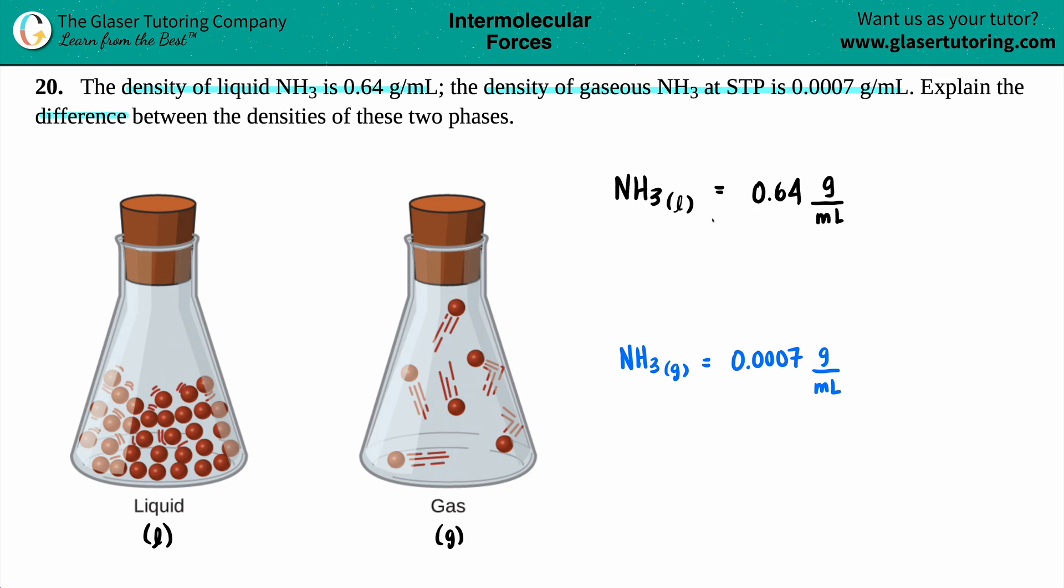Now to help us out in this question, what I'm going to do is basically take the values and turn them into talking points. What does 0.64 grams per milliliter actually mean? What does 0.0007 grams per milliliter actually mean? The first thing I'm going to do is take my value here and turn it into a fraction because I have fraction units, grams per milliliter. So I'm just going to take that 0.64 and put it over 1, and the same thing with the gas. I'm going to put 0.0007 over 1.